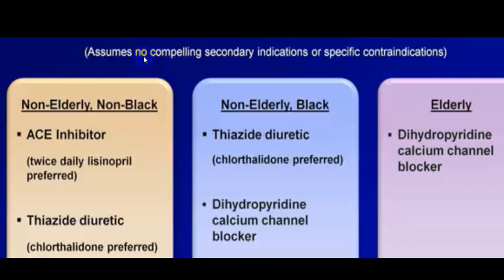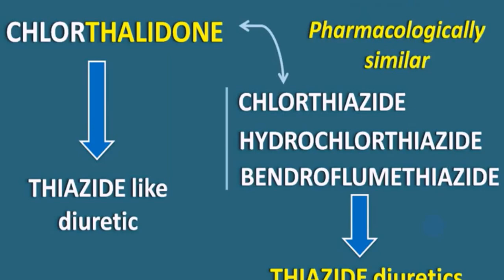In a non-compelling indication: in non-elderly, non-black patients, thiazide is used as monotherapy; in non-elderly black patients, thiazide is also used as monotherapy, and chlorthalidone is preferred over thiazide because of certain advantages. In elderly individuals, the first drug of choice is CCB, specifically dihydropyridine CCB.